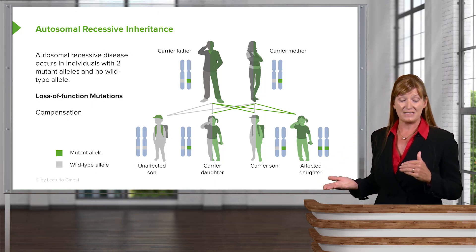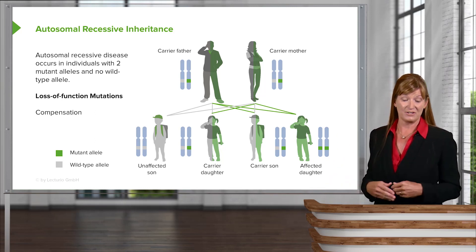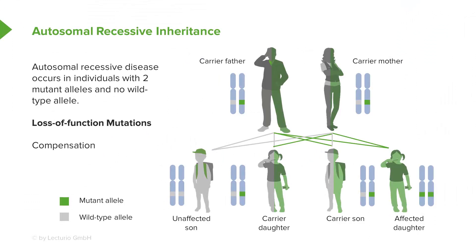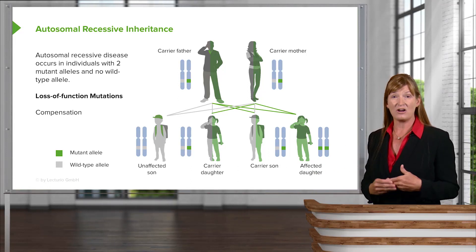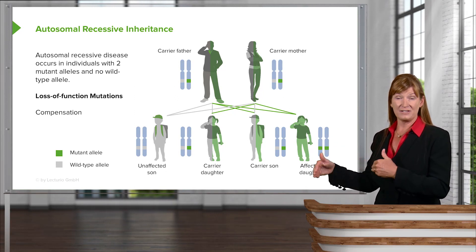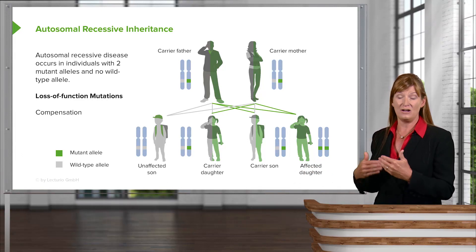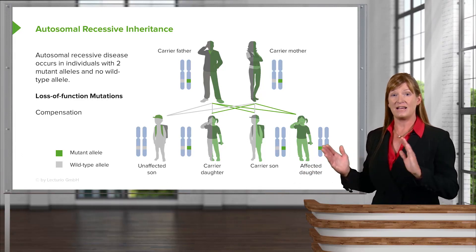Autosomal recessive diseases occur in individuals who have two mutant alleles. Usually, autosomal recessive diseases are loss-of-function diseases, and in the heterozygote there's some compensation. They may have half the gene product — in the case of sickle cell, for example, half of their hemoglobin will be of the sickle cell variety and half will be regular, and this is enough to get by. Having two recessive alleles in that case is fatal, but it's not always fatal — it's just the recessive condition expressing the actual phenotype.